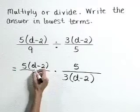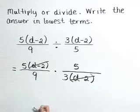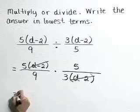Now before multiplying, why don't we cancel our common factors of d minus 2 and multiply what's left. In the numerator,